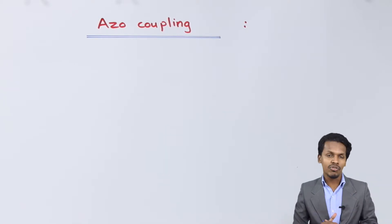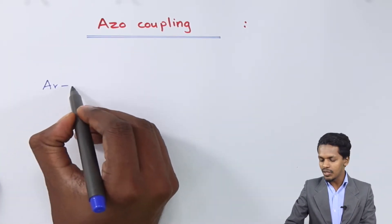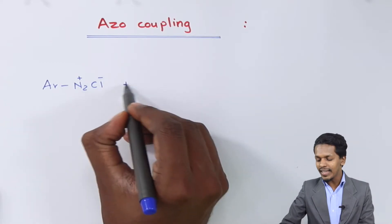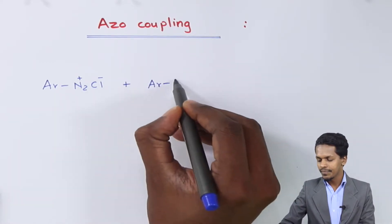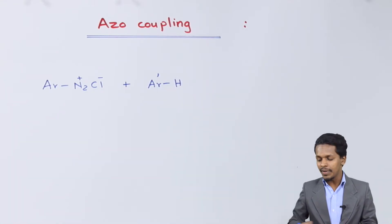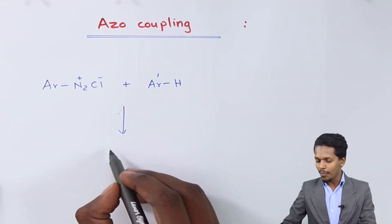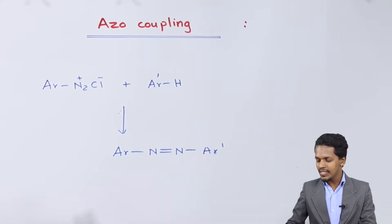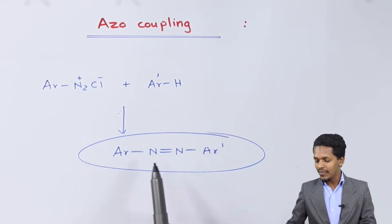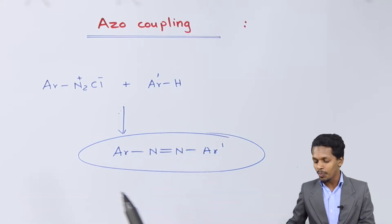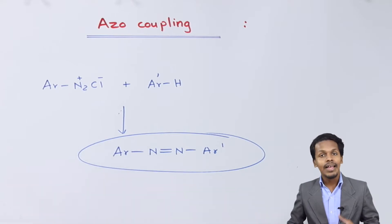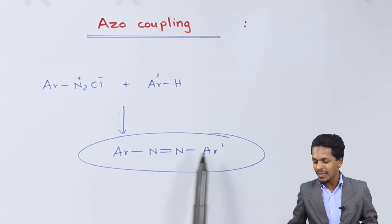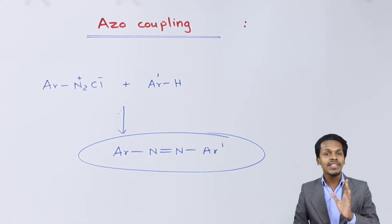Let me briefly explain what azo coupling actually is. Suppose we have an arene diazonium salt — for example, arene diazonium chloride — and we react it with an aromatic compound. The product that forms is Ar–N=N–Ar'. This is an azo group, and it couples the two aromatic rings together. That is why the reaction is called azo coupling.